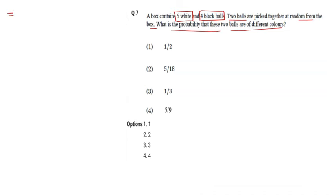Let's solve this by concept. For two different balls, first we need the total number of balls. Total number of balls will be 5 plus 4, which equals 9.